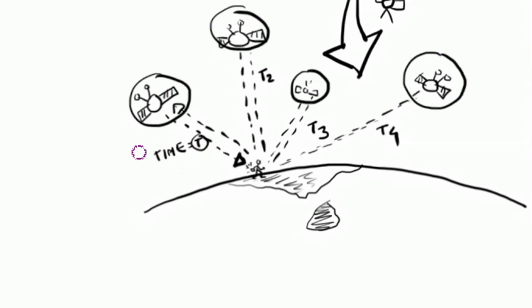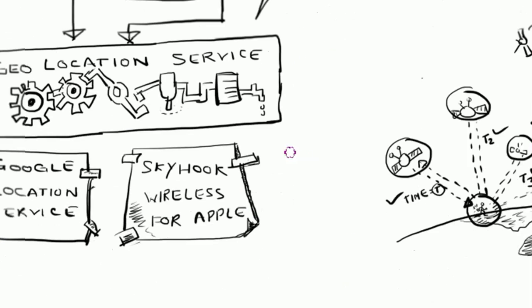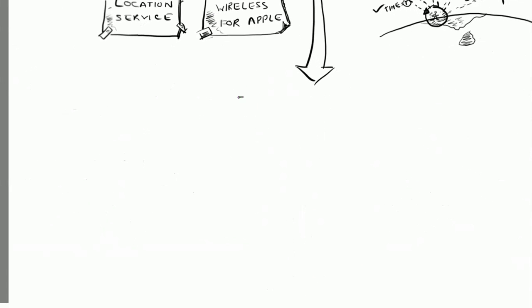As the number of satellites increases, the position that the mobile gives is more and more accurate. GPS is one option and the most accurate option available for the location services to find your device position.